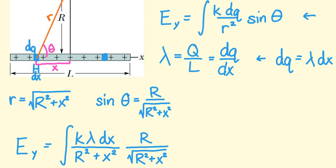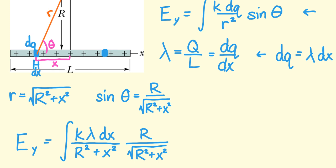Now when I look at my expression, I see that K, lambda, big R are all constants. The only variable that I have in this expression for the integral is x. So now I'm ready to take the integral, but first I must come up with limits.